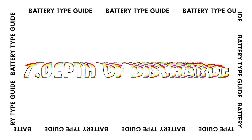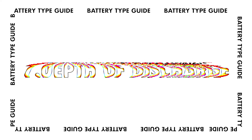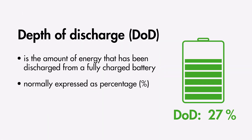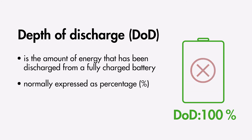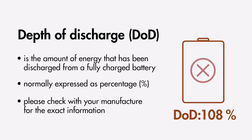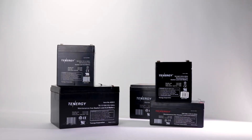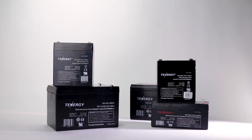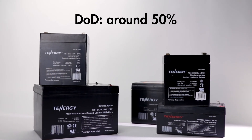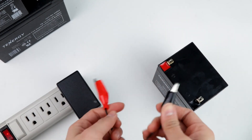Each battery type also has a different depth of discharge — the amount of energy that can be discharged from a fully charged battery, normally expressed as a percentage. A higher depth of discharge means more power can be drawn within a single cycle. If a battery is discharged beyond its maximum depth of discharge, it will affect performance and reduce lifespan. In particular, watch out for sealed lead acid batteries, since their depth of discharge is usually around 50%, meaning you should only use up to 50% of capacity before recharging to maximize performance.